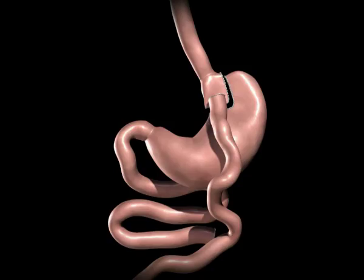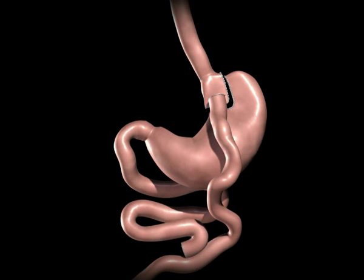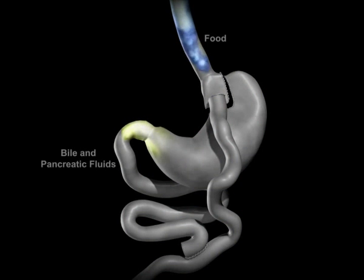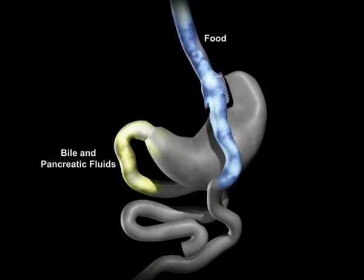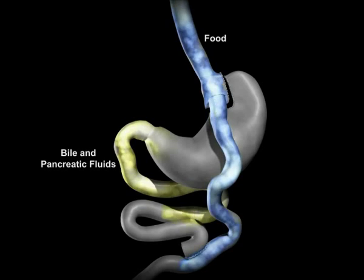Bypassing a portion of the small intestine decreases the absorption of calories and nutrients. The upper portion of the small intestine is reconnected to the lower portion of the intestine. The bile and pancreatic fluids from the liver and pancreas allow food to be completely digested.